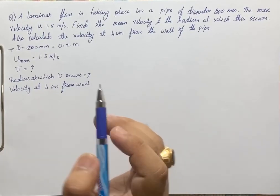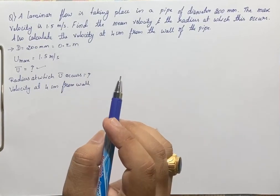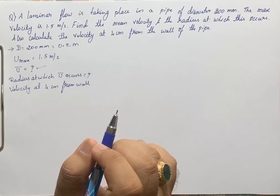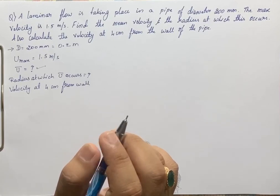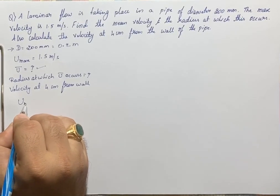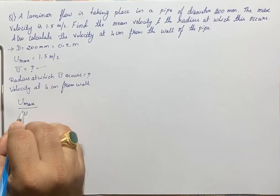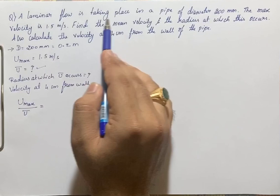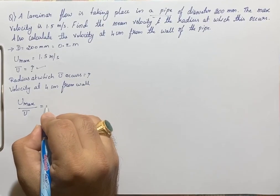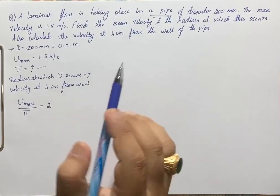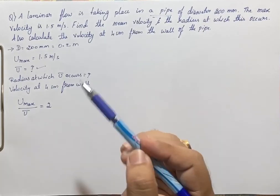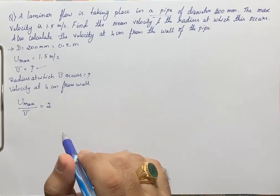To find u_bar, we use the formula for the ratio of maximum velocity to average velocity. For laminar flow in a pipe, u_max / u_bar = 2. If instead it were flow between two fixed parallel plates, that ratio would be 1.5, that is 3/2.